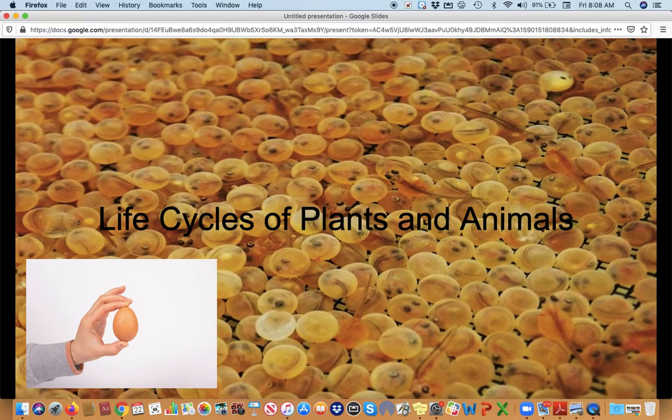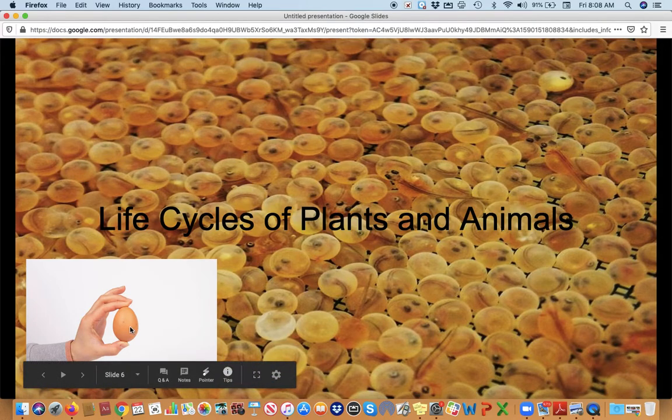Life cycles of plants and animals. So I've got the background image which is trout eggs, and there's even some little baby trout, the alevin as they're called, with their big bellies that they're feeding off of. And then there's a chicken egg.